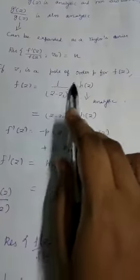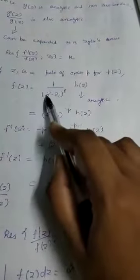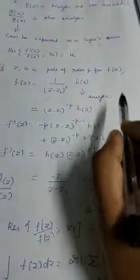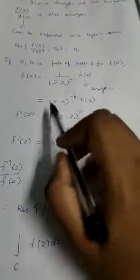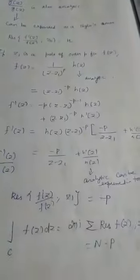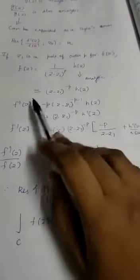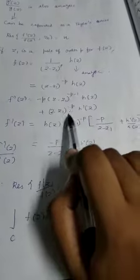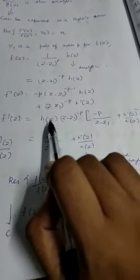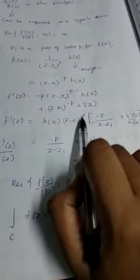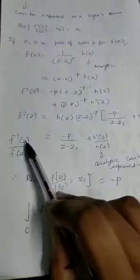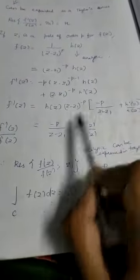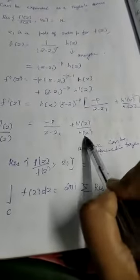Now if z1 is a pole of order p for f(z), then f(z) can be written as (z − z1)^(−p) · h(z), where h(z) is analytic and non-zero. Proceeding similarly, f'(z) = −p(z − z1)^(−p−1) · h(z) + (z − z1)^(−p) · h'(z). Taking the common factor (z − z1)^(−p) · h(z) outside, f'(z)/f(z) gives −p/(z − z1) + h'(z)/h(z).